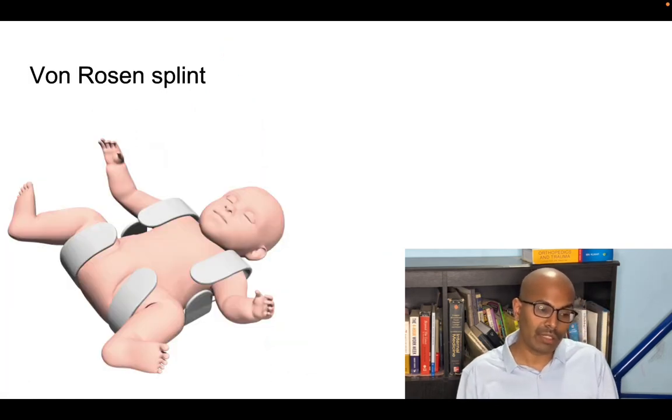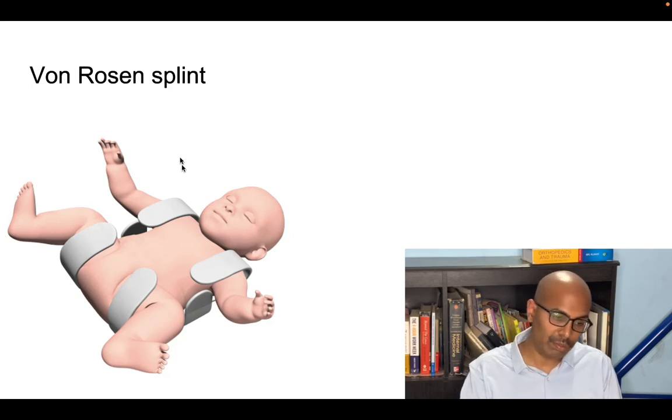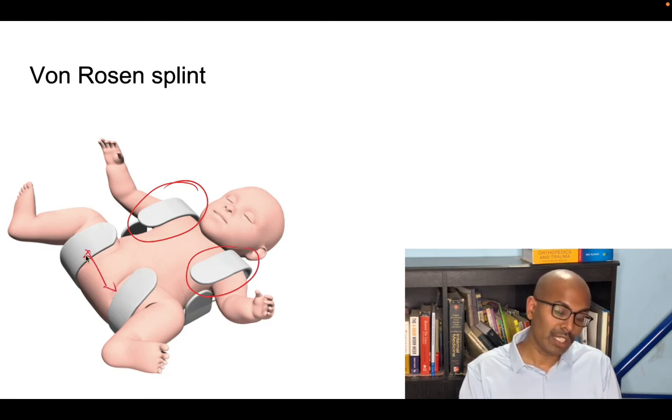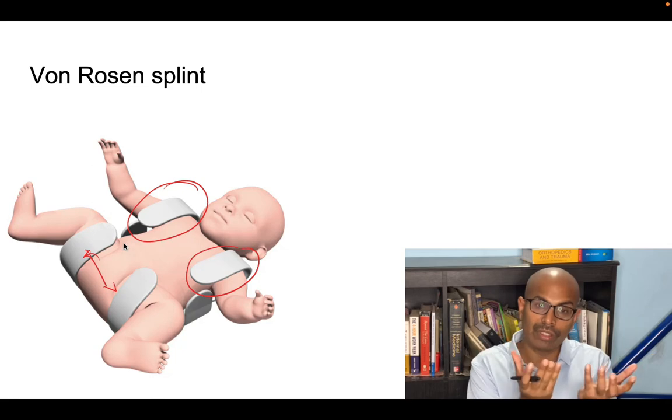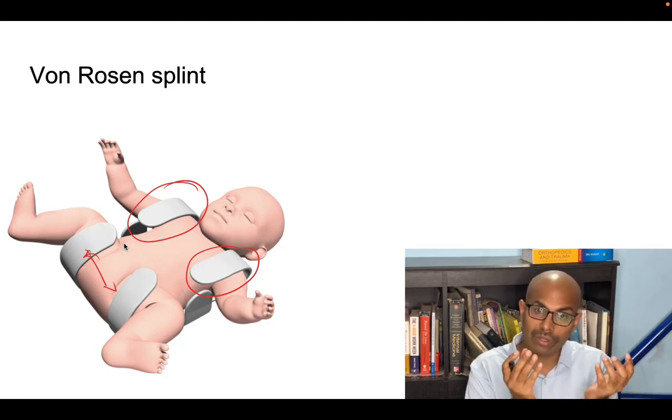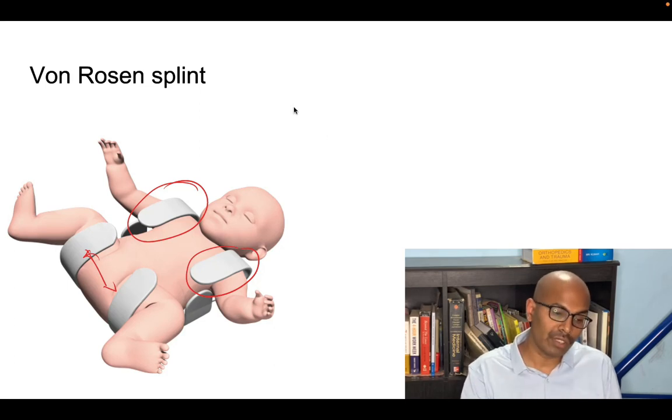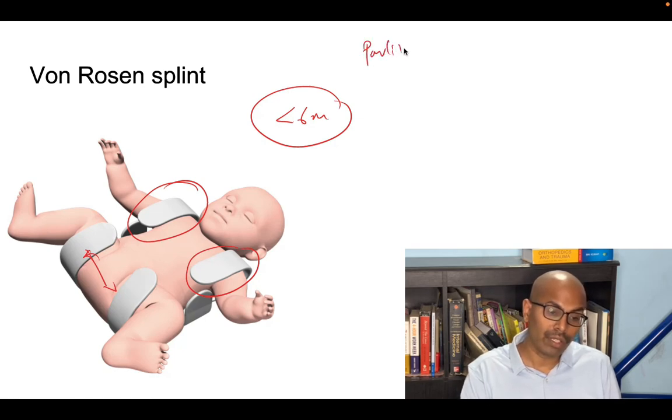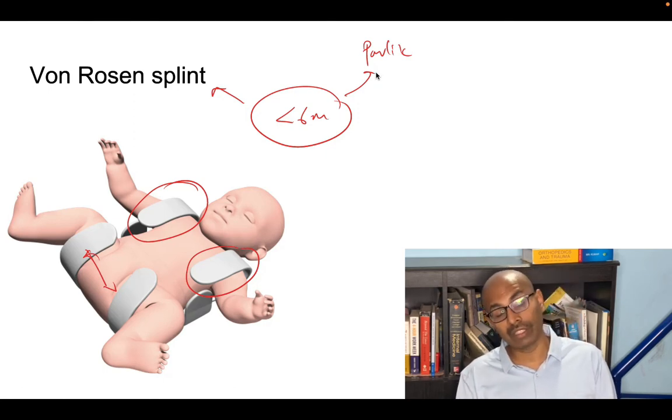We also have a similar splint called the Von Rosen splint made of plastic or aluminium material. This also keeps the hips in abduction. When you keep the hips in abduction, the hips go inside the socket and mould the acetabulum and the dislocation is reduced. In congenital dislocation of hip less than six months of age children you can use either Pavlik harness or brace or Von Rosen splint and both of these are the right answers for treatment in children less than six months of age.